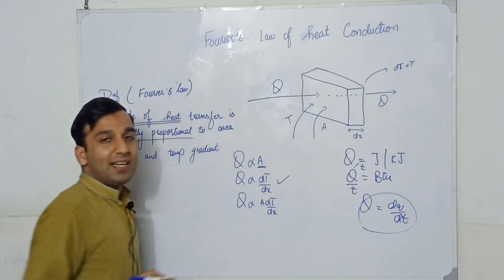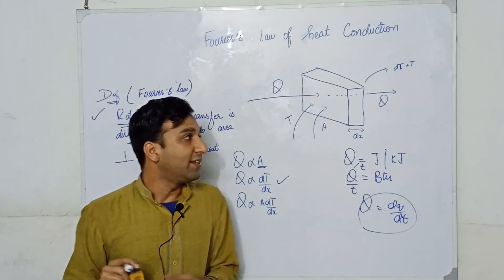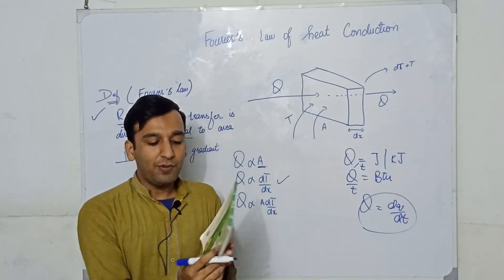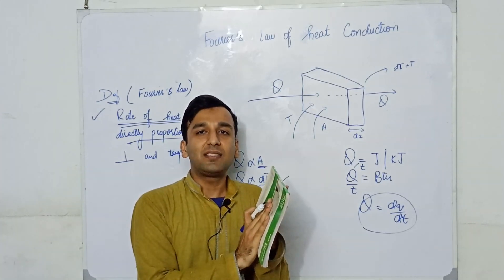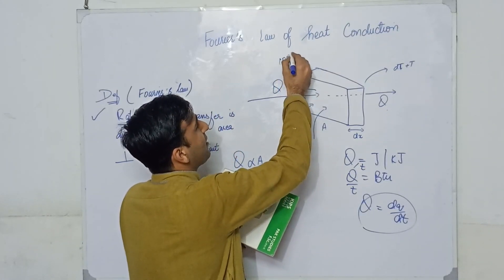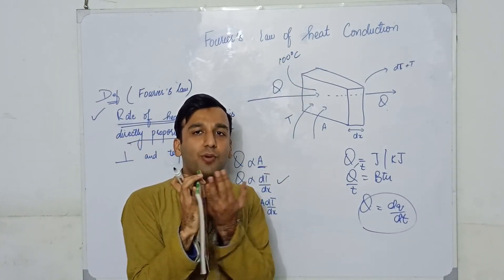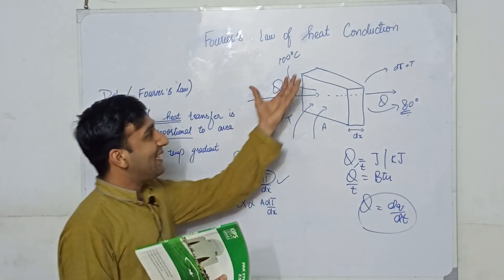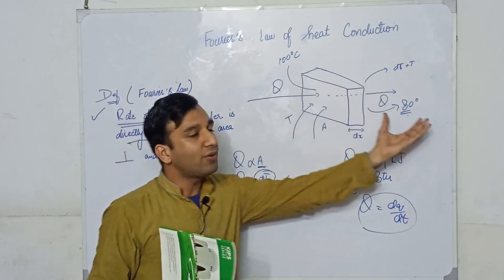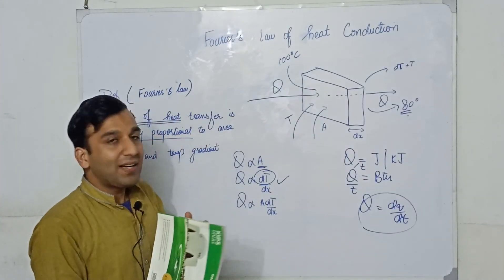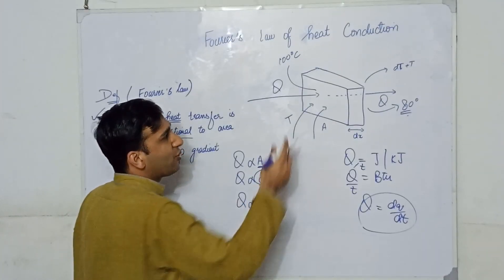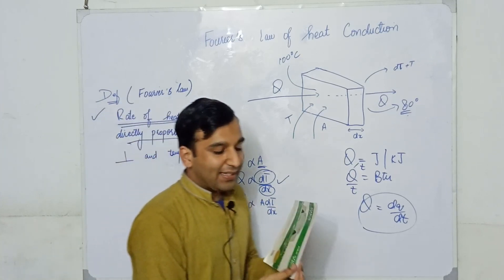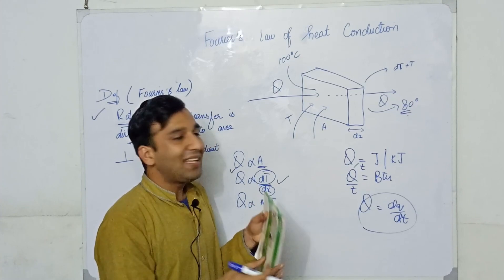The second condition is that heat transfer is directly proportional to the temperature gradient. The temperature gradient is the temperature difference divided by the width. For example, if one side of the wall is 100°C and the other end is 80°C, that difference is delta T. The more will be the delta T, the more heat transfer. Also, the more will be the width dx, the less will be the heat transfer.